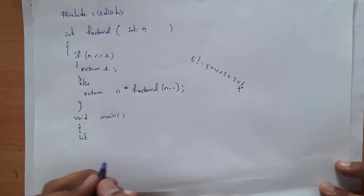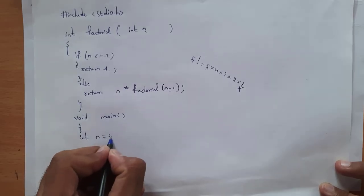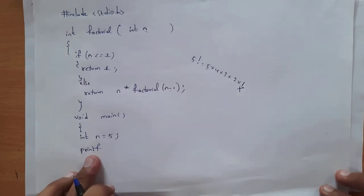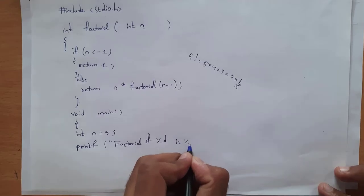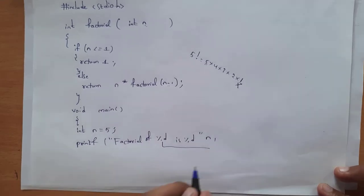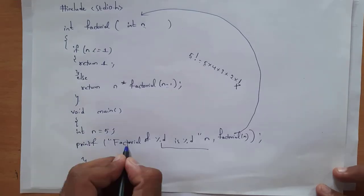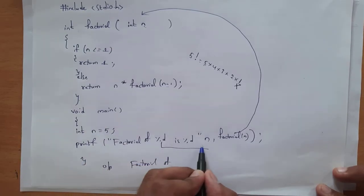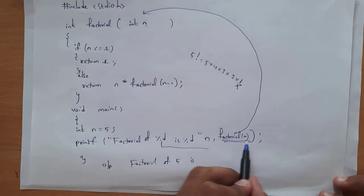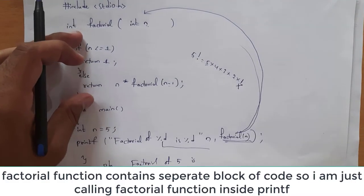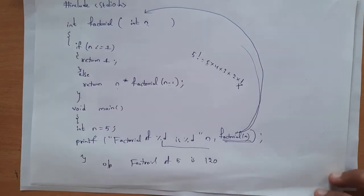After writing your own function, you need to write void main. Inside this, give the number — I want to find factorial of 5, so int n = 5. After that write printf with the format: 'factorial of %d is %d', with arguments n and factorial(n). The factorial(n) calls the function block. So factorial of 5 is 5×4×3×2×1 = 120. This is the output to find factorial of a number using recursion.